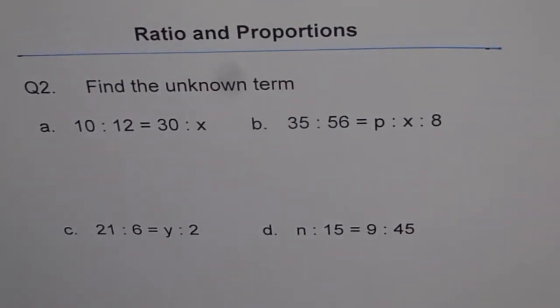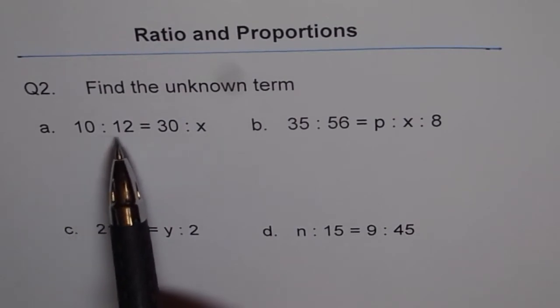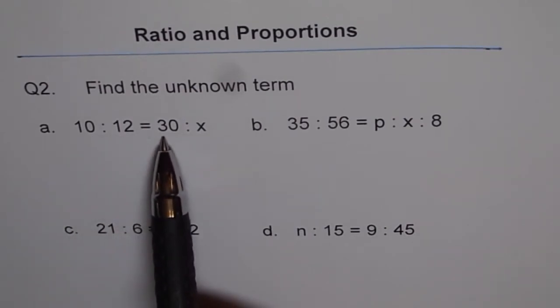Ratios and Proportions, question 2. Find the unknown term. 10 is to 12 equals 30 is to x.